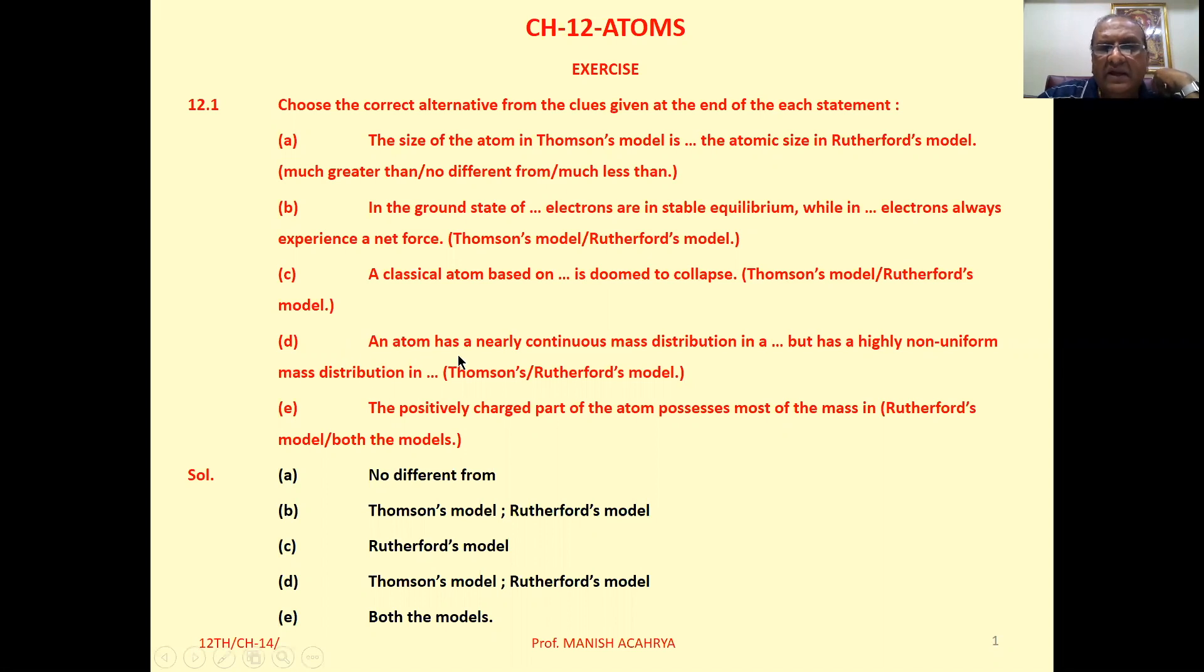D: An atom has a nearly continuous mass distribution in blank, but has a highly non-uniform mass distribution in blank. So an atom has a nearly continuous mass distribution in Thomson's model, because in that we consider the entire positive charge is uniformly distributed and electrons are embedded in it. It implies that mass distribution is continuous in the entire atom. But in Rutherford's model we discussed that almost entire mass is concentrated at the center, so it has a highly non-uniform mass distribution, that is in Rutherford's model.